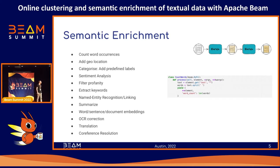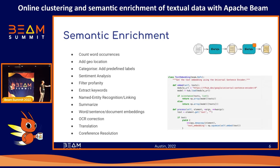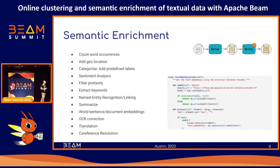Let's see in more detail how we actually do this. For something like counting words in a text document, it's a simple custom DoFn with one process method: we take an element, get the text, split on whitespace, and count the words. However, for sentiment analysis, entity recognition, summarization, embeddings, translation, and so on, these operations are less straightforward and require machine learning models, which can be very large. So we need to find some method of handling this using Apache Beam.